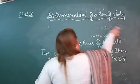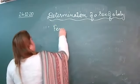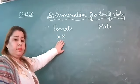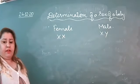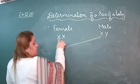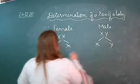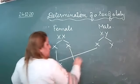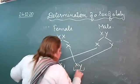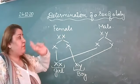In females, the sex chromosomes are the same — XX. And in males, one is X and one is Y. X is for the girl and Y is for the boy. So female has two X chromosomes and the male has one X and one Y. Y is for the boy.